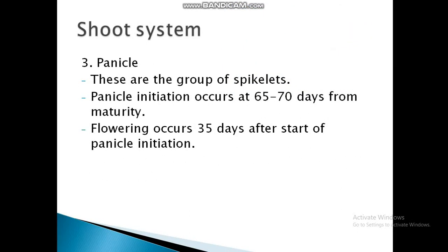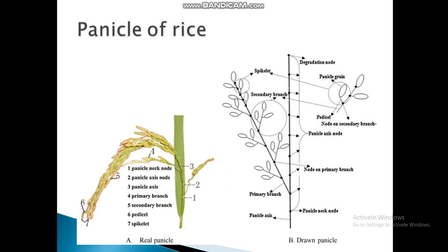The panicle is a group of spikelets. Panicle initiation occurs after 6 to 7 days from maturity, and flowering occurs 35 days after the start of panicle initiation. This is the point when first-time flowering begins at panicle initiation.